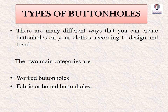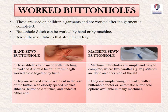There are many different ways to create buttonholes on your clothes according to design and trend. The two main categories are worked buttonholes and fabric or bound buttonholes. Worked buttonholes are used on children's garments and are worked after the garment is completed. Buttonhole stitches can be worked by hand or by machine. We need to avoid these on fabrics that stretch and fray easily.